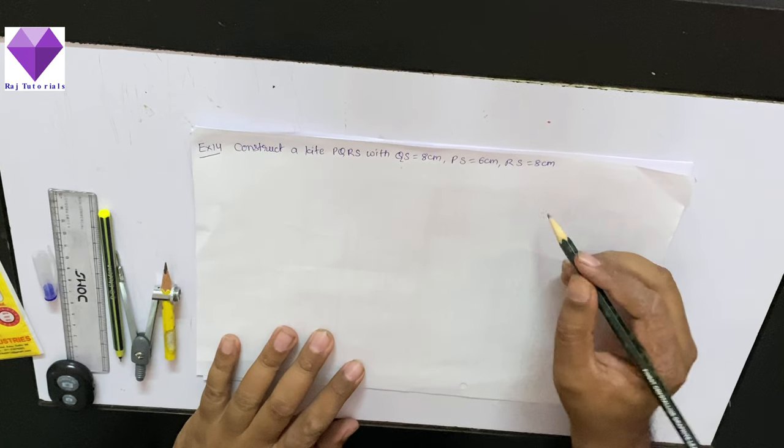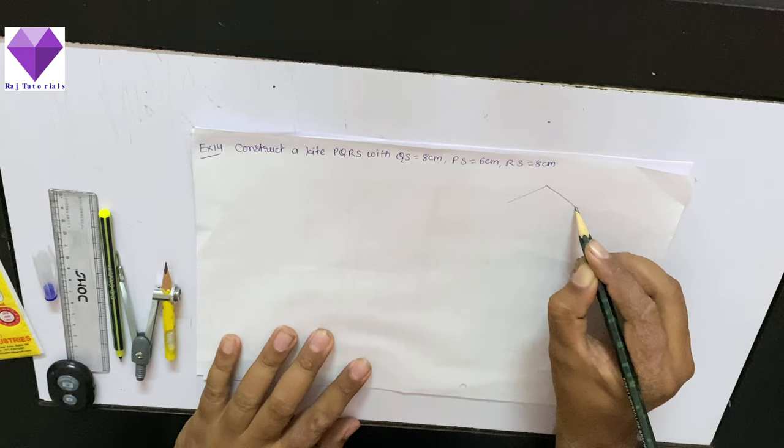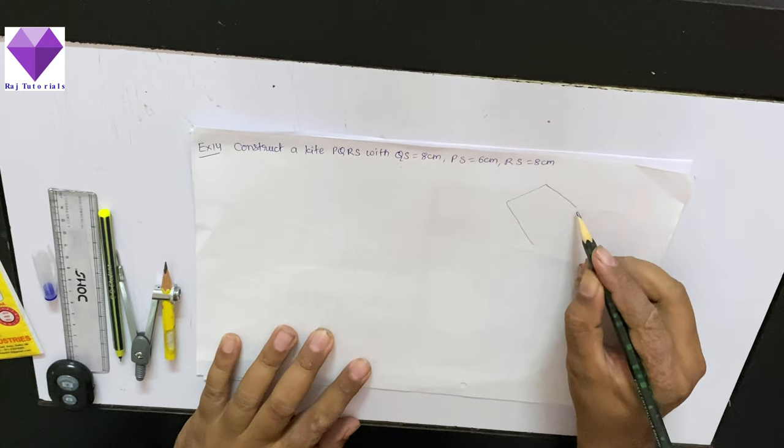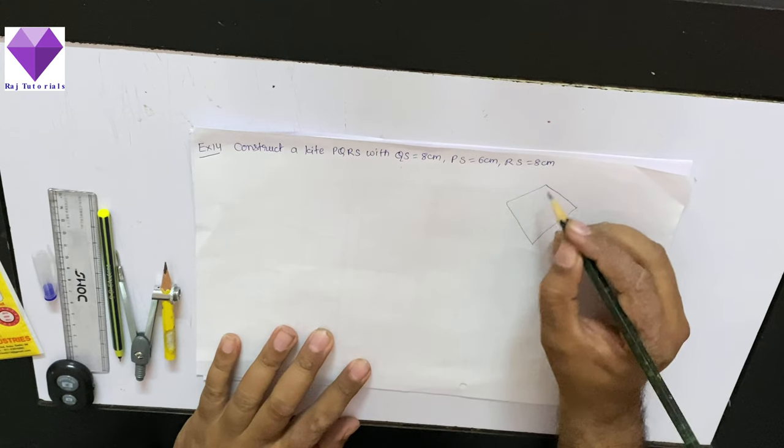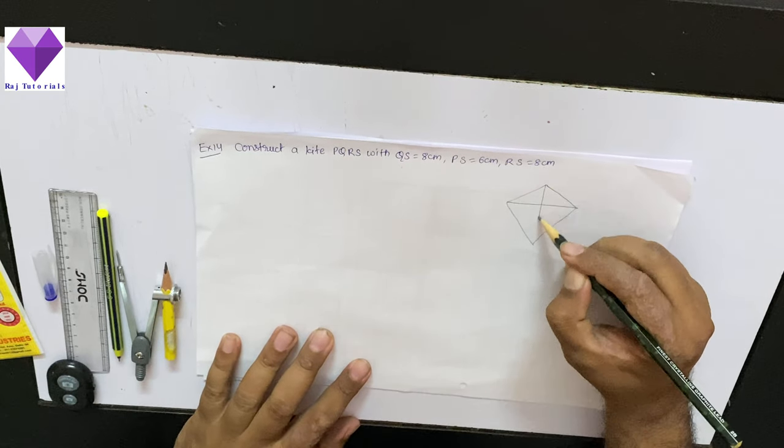First if I draw the rough sketch of this, kite means the above two sides will be equal, the bottom two sides will be equal and these are the two diagonals.